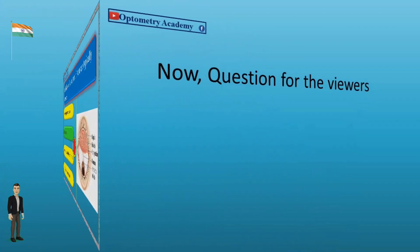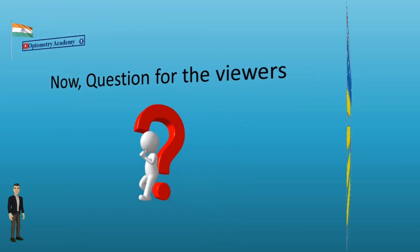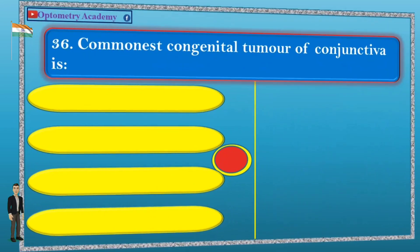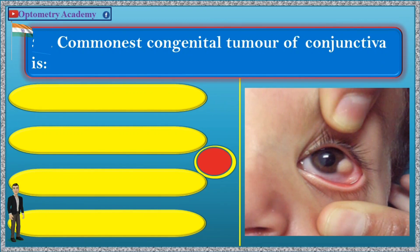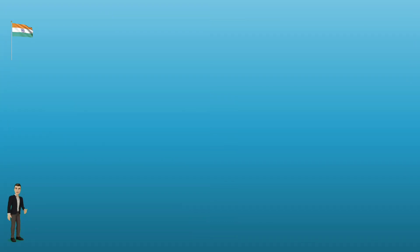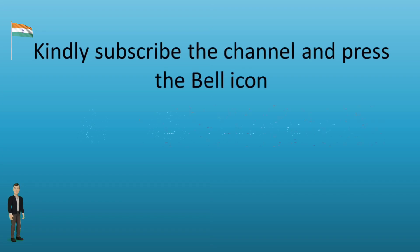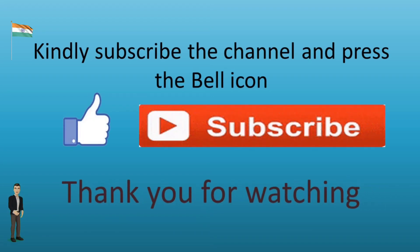Now, a question for the viewers: Commonest congenital tumor of conjunctiva is — A. Epibulbar dermoid, B. Benign melanoma, C. Papilloma, D. Capillary hemangioma. Kindly write your answer in the comment box. Kindly subscribe to my channel. Thank you for watching.